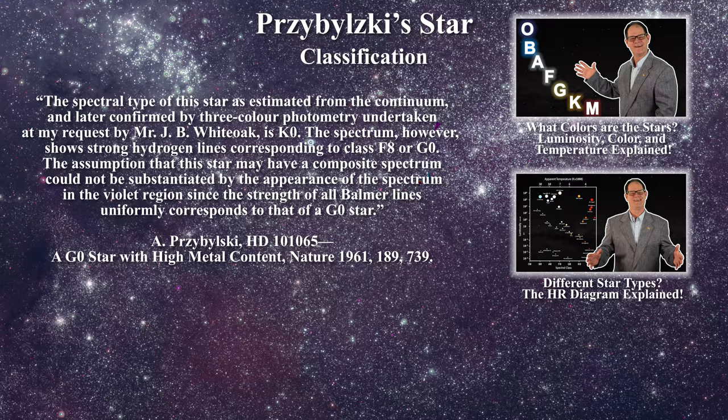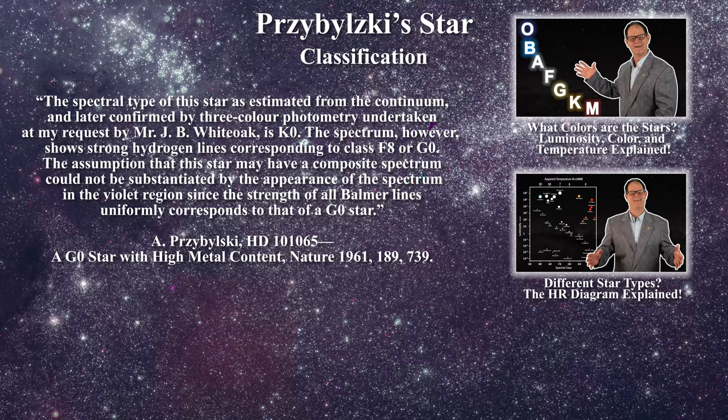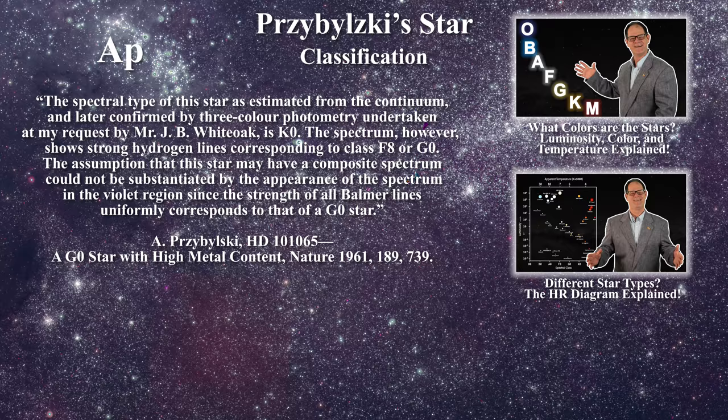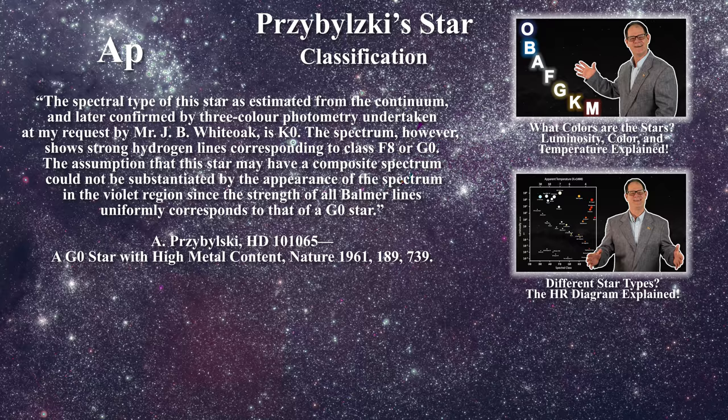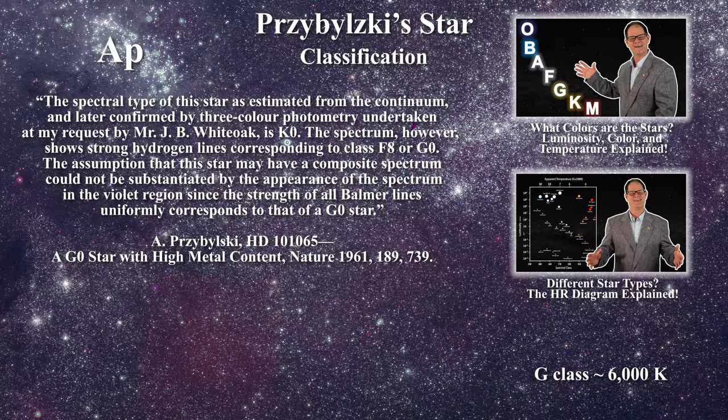A G0 class star is a star like the Sun, yet if you read the Wikipedia article on the star, they do not even mention the initial discovery paper. Rather, you learn that the star's classification is now Ap, meaning a peculiar A-class star. That is a little strange since G-class stars have a surface temperature like the Sun, and an A-class star has a much more elevated temperature around 8,000 to 10,000 Kelvin.